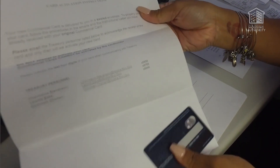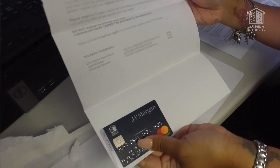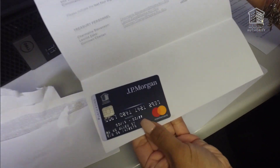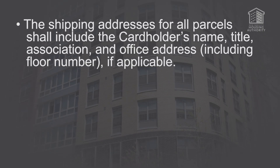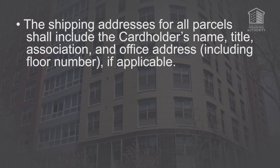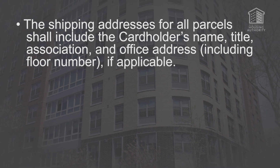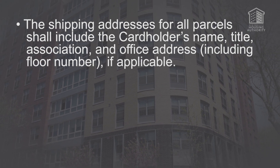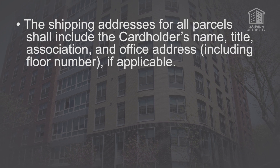This is an example of what you'll be receiving in the envelope — the letter along with the commercial card. Using the commercial credit card, you are now able to make purchases in person, by phone, mail, fax, or internet for only approved spending plans and approved TPA proposals. The shipping address for all parcels must include your name, title, association, and office address, including floor number if applicable.